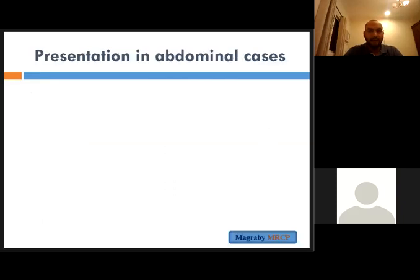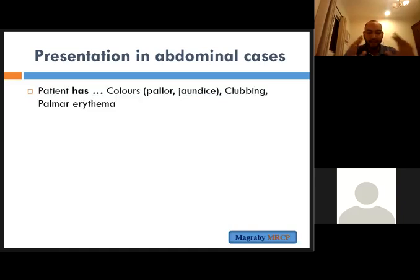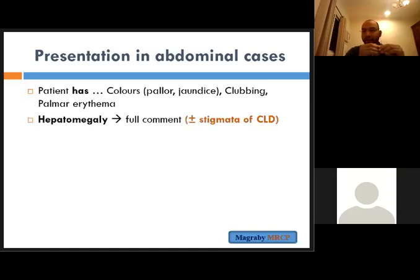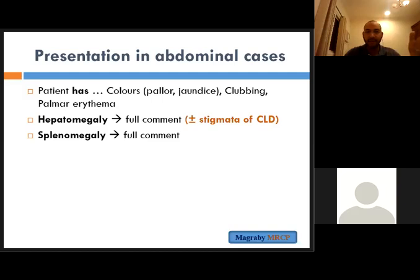Let's go to the presentation of abdominal examination — what is required. In the exam you need to present the findings as follows: first mention any peripheral observation or abnormality at the periphery, starting from the surrounding — anything attached to the patient such as a cannula, what you see connected, any scar, any walking aid — mention everything. Then mention any finger clubbing.